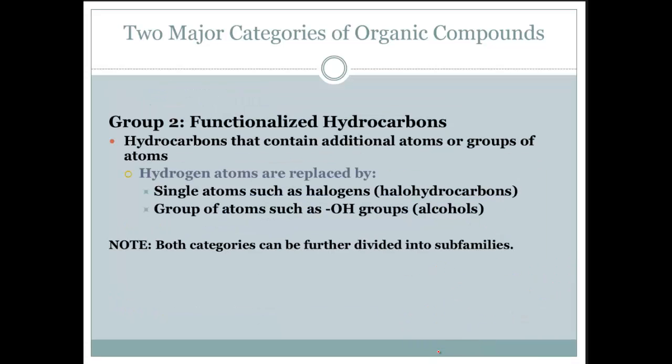Group two is functionalized hydrocarbons. Hydrocarbons that contain additional atoms or groups of atoms. Hydrogen atoms are replaced by halogens, a single atom, or a group of atoms such as OH, hydroxide, and the hydroxyl group. Both categories can be further divided into subfamilies.